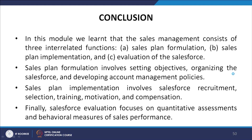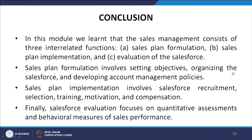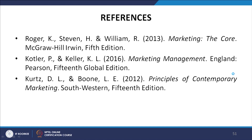In conclusion, in this module we have learned that sales management consists of three interrelated functions: sales plan formulation, sales plan implementation, and evaluation of the sales force. Sales plan formulation involves setting objectives, organizing the sales force, and developing account management policies. Sales plan implementation involves sales force recruitment, selection, training, motivation, and compensation. Finally, sales force evaluation focuses on quantitative assessments and behavioral measures of sales performance.